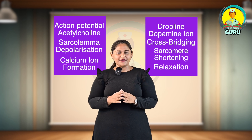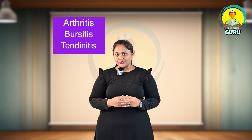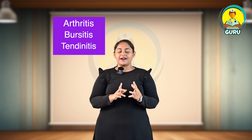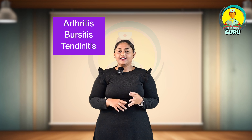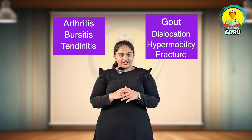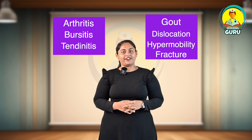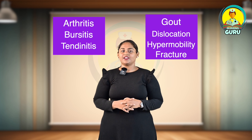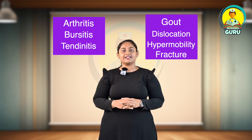Coming to the pathological part of the musculoskeletal system — the diseases and conditions it includes are arthritis, bursitis, tendinitis, gout, dislocation, hypermobility, and fracture. These are the pathological conditions of the musculoskeletal system.